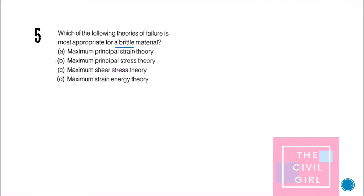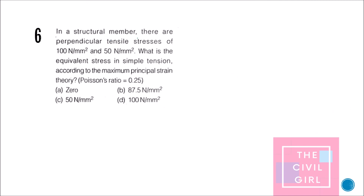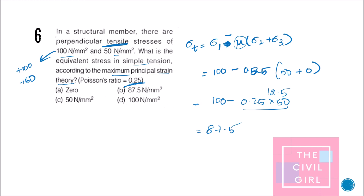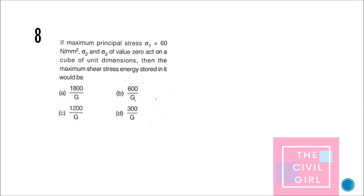Maximum principal stress theory (sigma_t = sigma_1) is very good for brittle materials — that is also the next question's answer. Question 6: In a structural member with perpendicular tensile stresses, the equivalent stress in simple tension according to maximum principal strain theory is: sigma_t = sigma_1 − μ·sigma_2, where sigma_1 = +100 and sigma_2 = +50, giving option B.